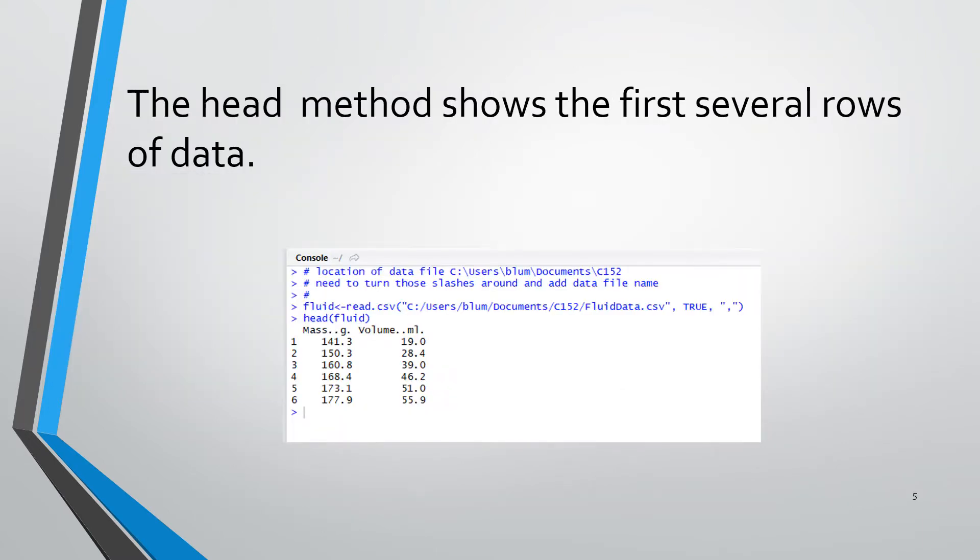So we use the read.csv method to read in the file and take the results and put it into a variable we are calling fluid. And then in the next line, we are using the method called head with an argument of fluid. So this is spitting out the first several lines of the file that we read. This is an important check that there's no use in going on with other steps in the program that rely on the data if we have not properly read in the data.